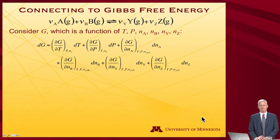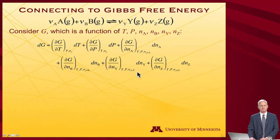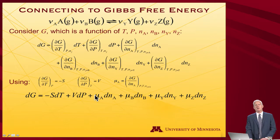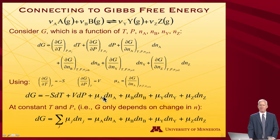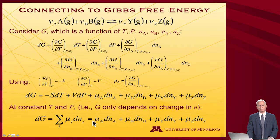Now let's connect that to the Gibbs free energy. The free energy is a function of temperature, pressure, and for this balanced reaction: number of moles of A, B, Y, and Z. When I do the total differential of the free energy, it's the partial derivative with respect to all those different variables with all other variables held constant. I can insert entropy for partial G/partial T, volume for partial G/partial P, and rewrite the remaining terms in their usual compact form as chemical potentials. At constant T and P, the first two terms are zero, so dG is just the sum over all components of the chemical potential of the component times the variation in the number of moles of that component.